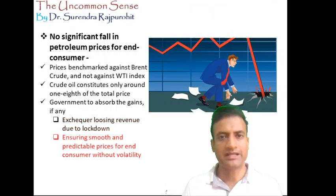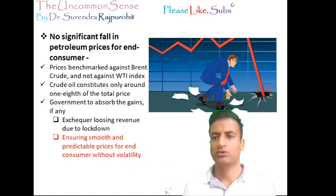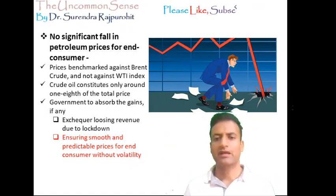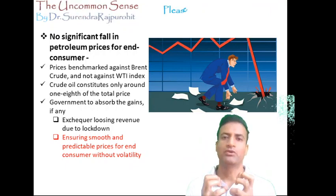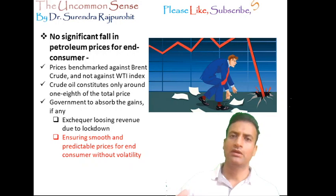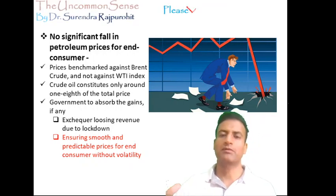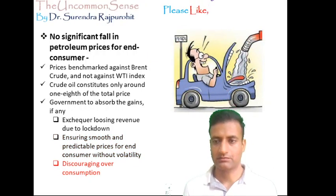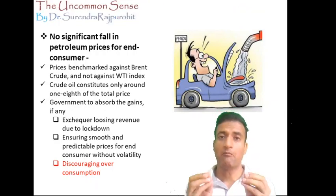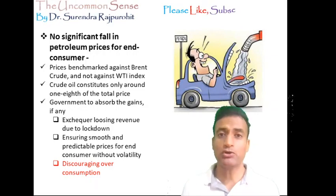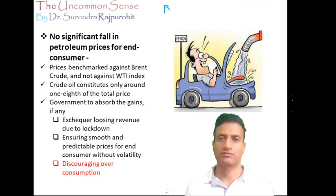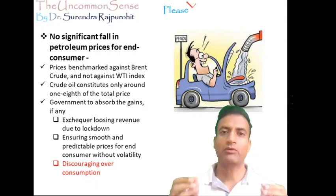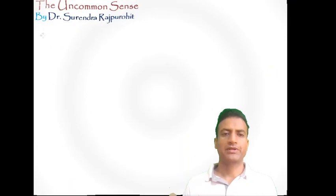Secondly, it does not make any sense to expose the end consumer to these highly volatile prices with every fluctuation in the international market. It is expected that most of this volatility would be absorbed at the government level, so as to give the end consumer smooth, consistent, and predictable prices. Thirdly, a sudden drop in prices for the end consumer might result in over-consumption of such a pollution-causing, non-renewable resource, which the government would not like to encourage — especially when they want the automobile industry to go electric by 2030.